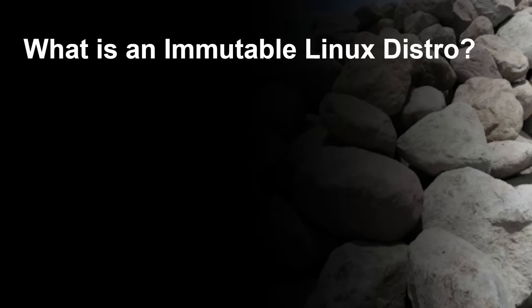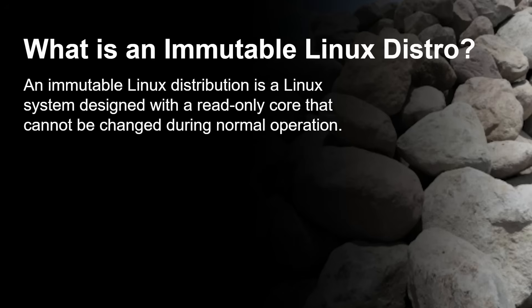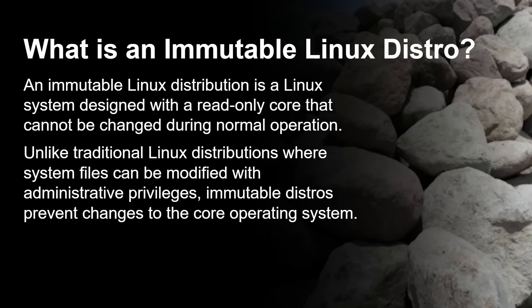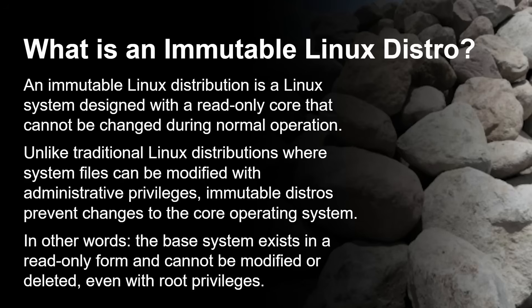So what is an immutable Linux distro? An immutable Linux distro is a Linux system designed with a read-only core — bringing us back to the idea of ROMs and read-only memory — that can't be changed during normal operation. Unlike traditional Linux distros where system files can be modified with administration privileges, immutable distros prevent changes to the core OS because the base system exists in a read-only form and cannot be modified or deleted, even with root administrative privileges.